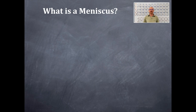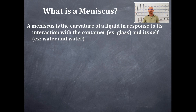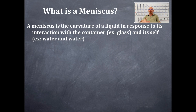What is a meniscus? A meniscus is a curvature of a liquid in response to its interaction between the container and itself. That container is typically glass for us here in chemistry, and itself would be whatever that liquid is — so water and water, mercury and mercury.